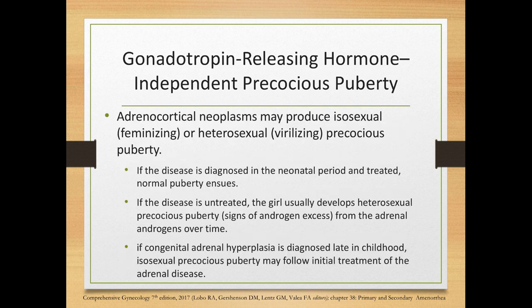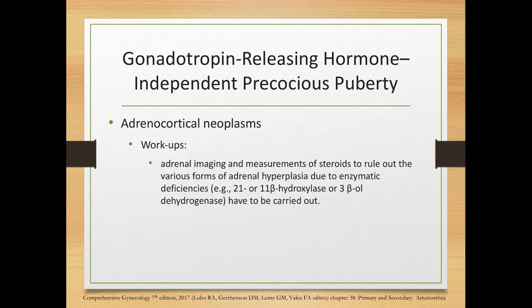Adrenocortical neoplasms may produce isosexual or heterosexual precocious puberty. If diagnosed in the neonatal period and treated, normal puberty may ensue. If untreated, the girl usually develops heterosexual precocious puberty from adrenal androgens over time. If congenital adrenal hyperplasia is diagnosed late in childhood, isosexual precocious puberty may follow initial treatment of the adrenal disease. Workup includes adrenal imaging followed by steroid measurements to rule out various forms of adrenal hyperplasia due to enzymatic deficiencies.